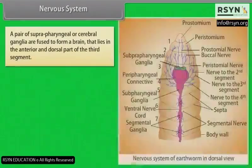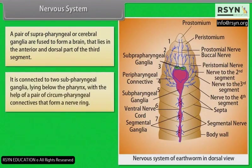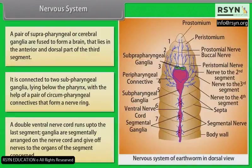Nervous System: A pair of suprapharyngeal or cerebral ganglia are fused to form a brain, lying in the anterior dorsal part of the third segment. It is connected to two subpharyngeal ganglia lying below the pharynx via a pair of circumpharyngeal connectives that form a nerve ring. A double ventral nerve cord runs up to the last segment, with ganglia segmentally arranged and giving off nerves to the organs of each segment.